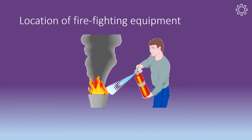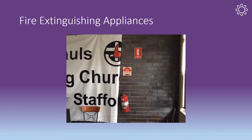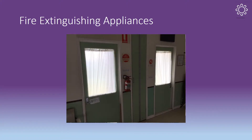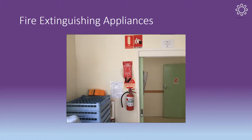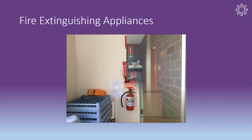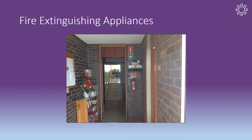Now let's look at the locations of the various pieces of firefighting equipment. There is a dry powder fire extinguisher behind the sound desk in the church. On the upper level there are dry powder fire extinguishers in the hall and in the kitchen. A fire blanket is also located in the kitchen. The final extinguisher is located outside the church office. If required, a first aid kit is located above this extinguisher also.